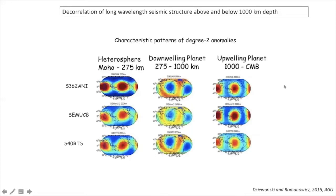This change in pattern at the longest wavelengths is actually clearly visible in all shear wave velocity tomographic models. A comparison of three recent shear wave tomographic models shows the average degree-2 pattern in three regions of the mantle, which were baptized: the 'heterosphere' — the top 200-300 km of the mantle; the 'downwelling planet' from the top of the transition zone to 1,000 km depth; and the 'upwelling planet' from 1,000 km to the core-mantle boundary. These names were given by Adam Dziewonski shortly before he passed away. This well-resolved change in pattern has been in tomographic models for at least 15 to 20 years, but somehow its significance had not been noticed for many years.